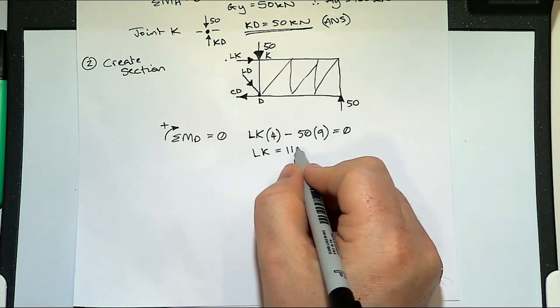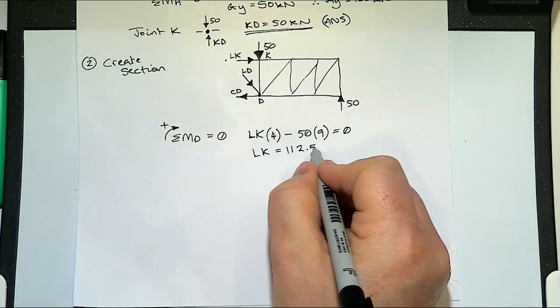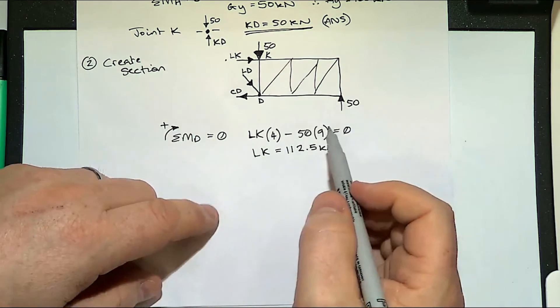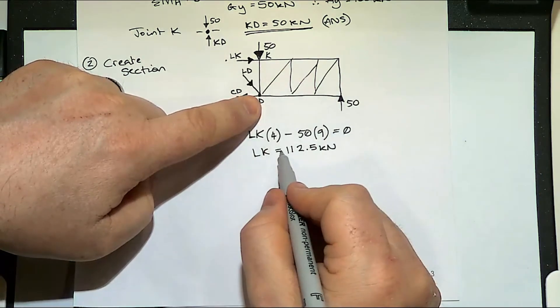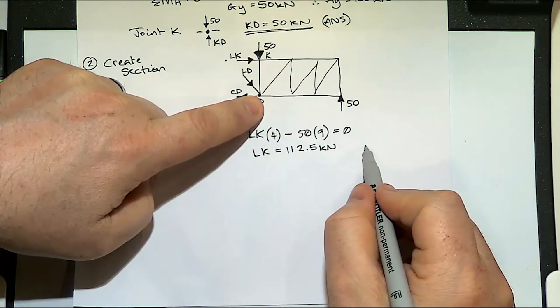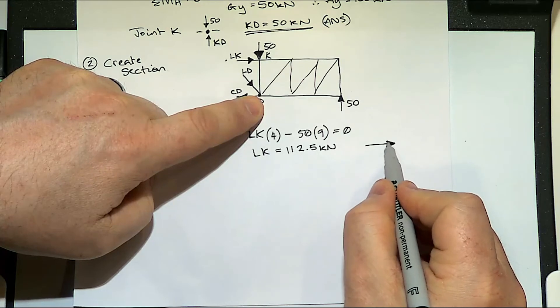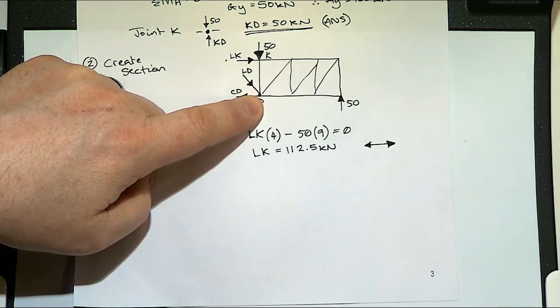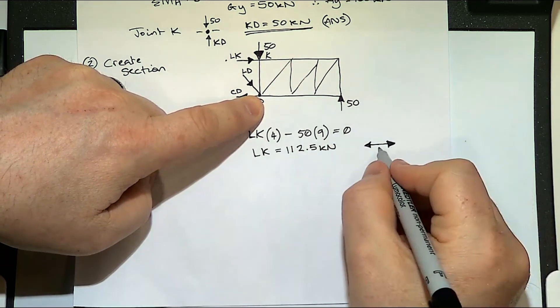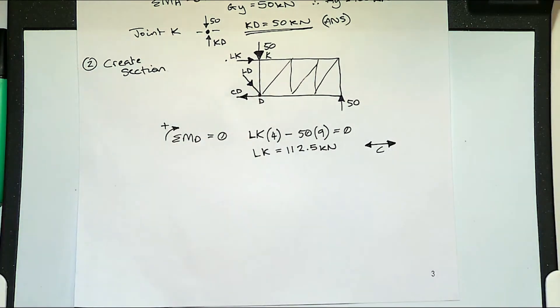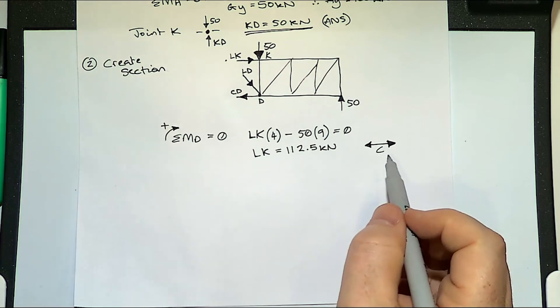Which is 112.5 kilonewtons. So that LK is positive so that LK is pointing outwards. Is that tension or compression? Compression. Because it's pushing outwards therefore there's forces pushing in and it's having to resist and push outwards so therefore it's in compression.